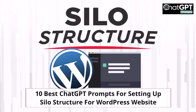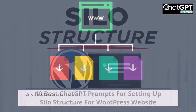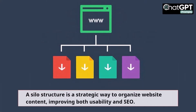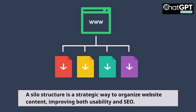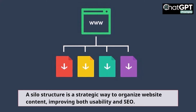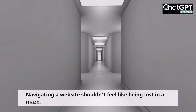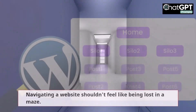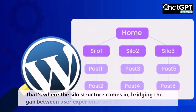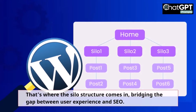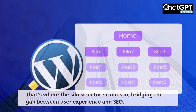10 Best ChatGPT Prompts for Setting Up Silo Structure for WordPress Website. A silo structure is a strategic way to organize website content, improving both usability and SEO. Navigating a website shouldn't feel like being lost in a maze. That's where the silo structure comes in, bridging the gap between user experience and SEO.